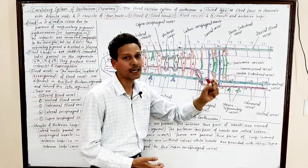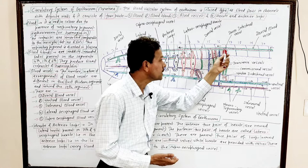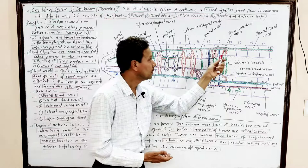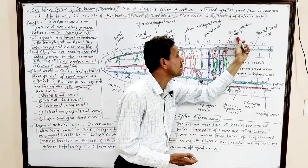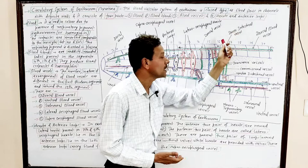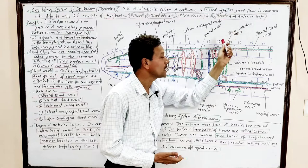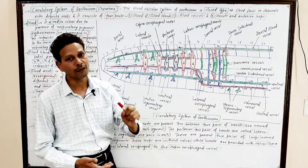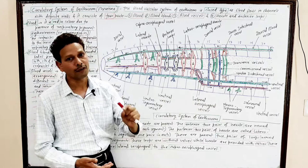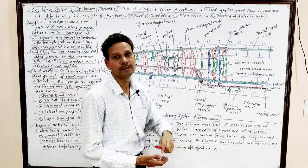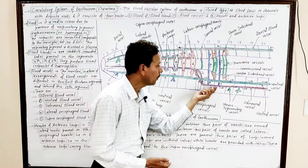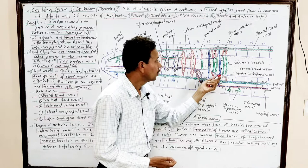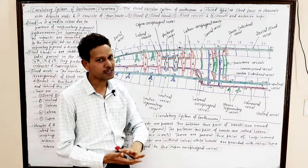In each intestinal segment, this dorsal blood vessel receives one to two pairs of dorsal intestinal vessels, which collect blood from the intestine through two pairs of transverse vessels from each segment. Additionally, in each segment of the intestinal region, it collects a pair of commissural vessels, which carry blood from the subneural vessel to the dorsal blood vessel.